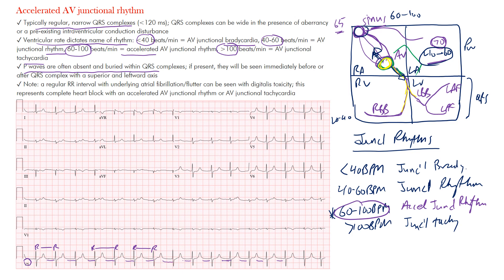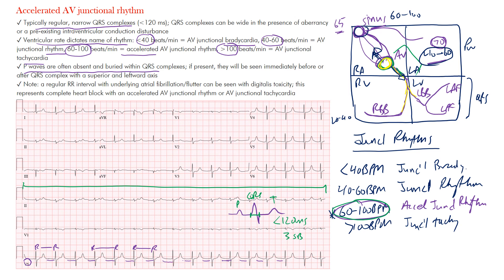Because the intervals are the same, this is a regular rhythm with a narrow QRS complex. The QRS complex width — from beginning to end — should normally be less than 120 milliseconds, or three small boxes, and that is the case here. The rate must be between 60 and 100 beats per minute to call it an accelerated junctional rhythm.